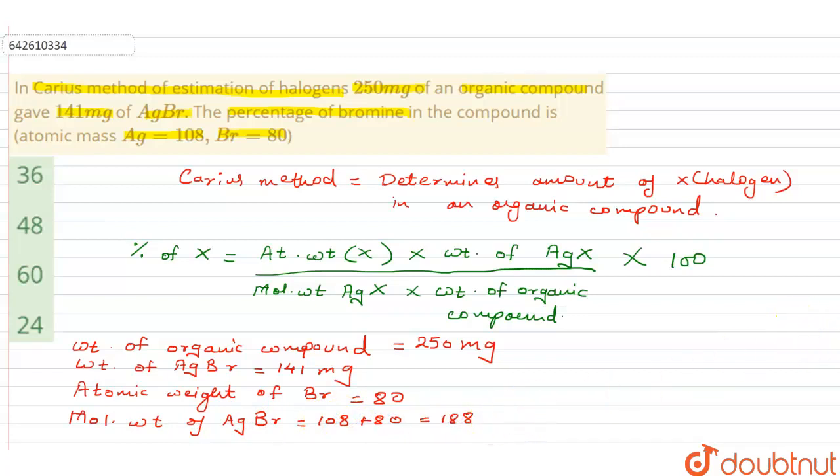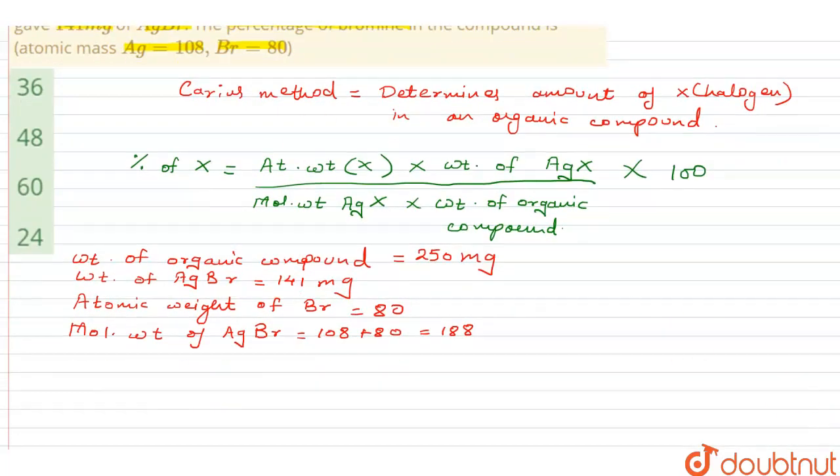So now since all of the values are available, let us proceed. Percentage of Br will be equal to atomic weight of Br, which is 80, into weight of AgBr which has been obtained, that's 141 milligram, divided by molecular weight of AgBr, that's 188, into weight of the organic compound, that's 250 milligrams. Now 141 and 250 both are in milligrams, so we can cancel that off, and the total into 100.